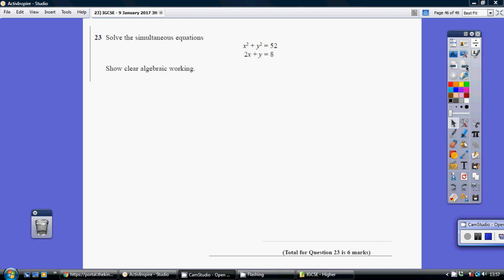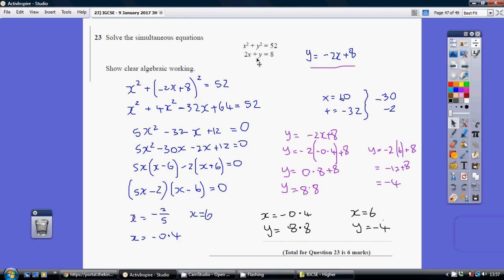Question 23. So I kick off by rearranging the easier linear equation to make either x or y the subject. I've just taken away 2x from both sides to get y equaling minus 2x plus 8.